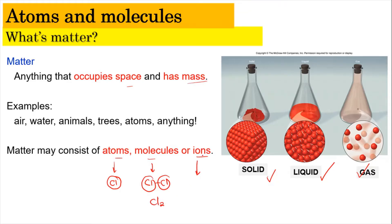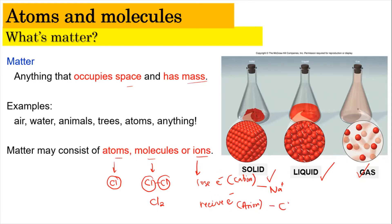Next, let's look into ions. Ions are basically atoms that lose or receive electrons. Atoms that lose electrons become positively charged, known as cations — for example, sodium plus (Na⁺). Sodium loses one electron to form Na⁺ to achieve octet electronic configuration. Atoms that receive electrons are anions — for example, chloride ion Cl⁻. The chlorine atom receives one electron to become Cl⁻, also achieving octet electronic configuration.